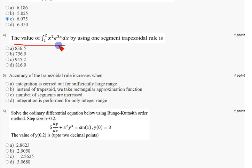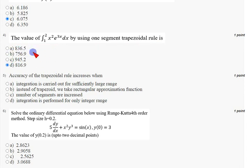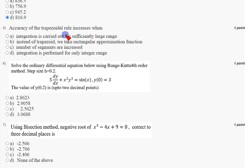Coming to the fourth question — they have given a differential equation and asked us to apply the one-segment trapezoidal rule. The answer I got is option D: 816.9. You will get this exactly when you work through it step by step. Mark option D as the correct answer for the fourth question.